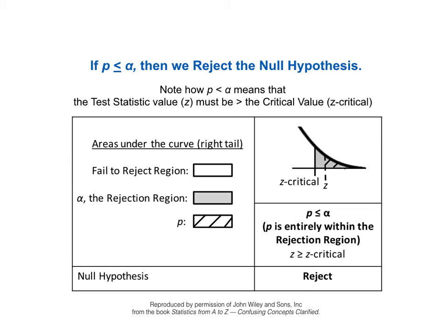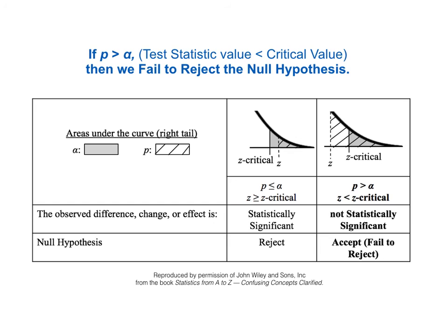Note how the critical value Z-critical marks the boundary of alpha, and the test statistic Z marks the boundary of P. If P is less than or equal to alpha, then its boundary — the test statistic Z — is farther away from zero than alpha's boundary, the critical value. So the test statistic value being greater than or equal to the critical value is the same thing as P being less than or equal to alpha. We fail to reject the null hypothesis if P is greater than alpha, or equivalently if the test statistic Z is less than the critical value Z-critical.